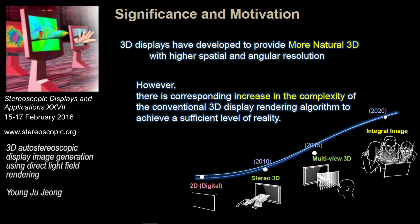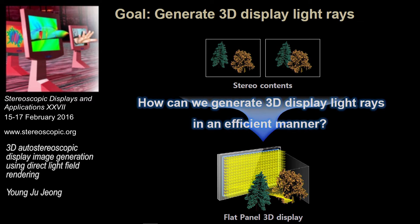Rapid development of 3D display technologies has enabled consumers to enjoy the 3D world through barrier-less 3D displays. These displays provide a large number of light arrays having high spatial and angular frequency. However, the conventional algorithm that generates light arrays for 3D displays is not sufficient, as there is a corresponding increase in complexity to achieve a sufficient level of realism. In this presentation, we will answer the question of how we can generate 3D display light arrays in an efficient manner.